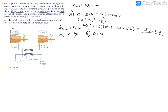Now we do the same thing for compressor B. The energy balance gives zero equals Q minus W plus m_dot_i times h_i minus m_dot_e times h_e. Again canceling heat transfer, and since mass flow rate in equals mass flow rate out, the power at B equals m_dot times (h_inlet minus h_exit), this time looking at states 3 and 4 instead of states 1 and 2.